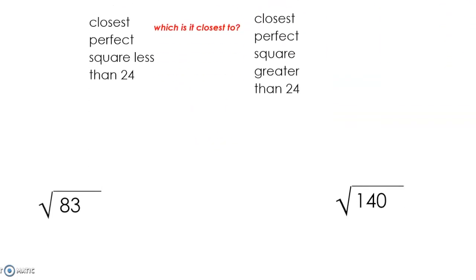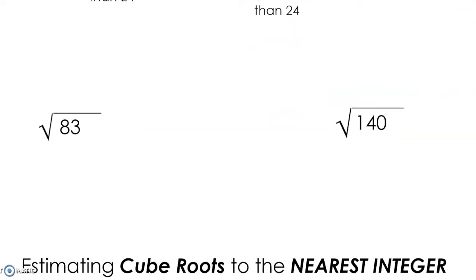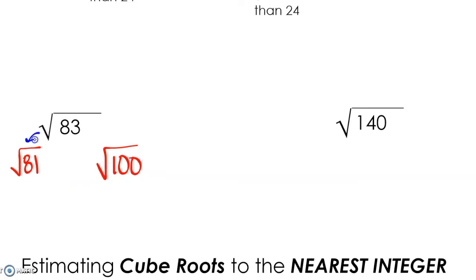Let's look at the square root of 83. The perfect square closest to 83 but less than 83 is going to be the square root of 81. And then on the greater end, the next perfect square that is greater than 83 is going to be the square root of 100. Since 83 is closer to 81, we can estimate the value of the square root of 83 to be 9, because the square root of 81 is 9.